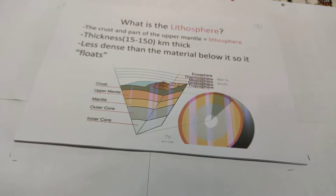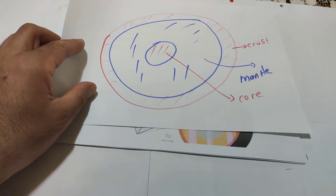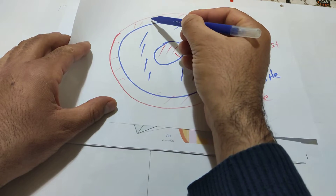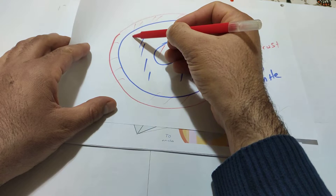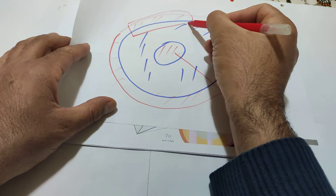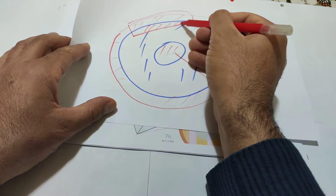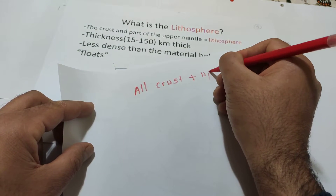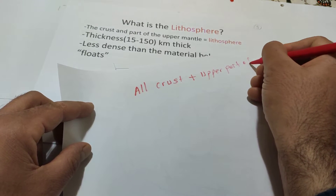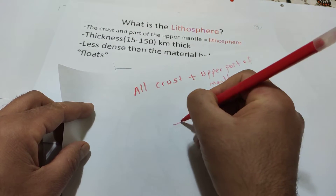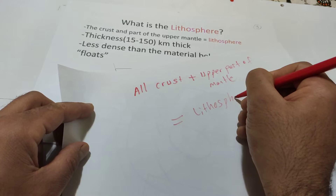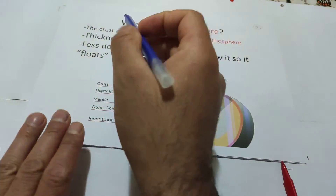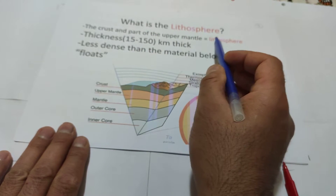Let us start. What is the lithosphere? Lithosphere - the whole crust and the upper part of the mantle. That layer - whole crust and a little bit of mantle - we call lithosphere. Lithosphere means all of the crust plus the upper part of the mantle. So the crust and a part of the upper mantle together equal the lithosphere.